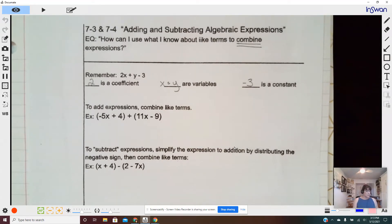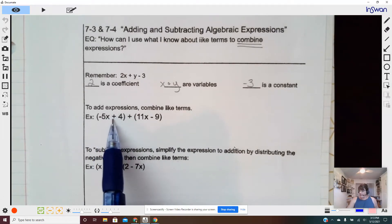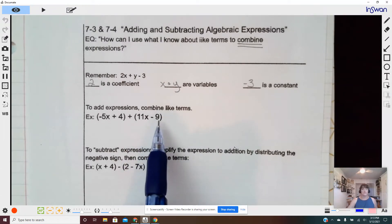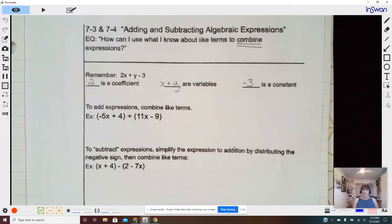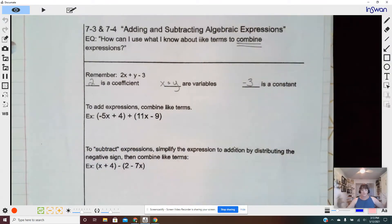Now, in order to add an expression, we need to combine like terms. So we have this expression, negative five x plus four, and we have this expression, 11x minus nine. The parentheses are not really necessary. They were put there to show us that we're combining two expressions, but they're not really necessary.